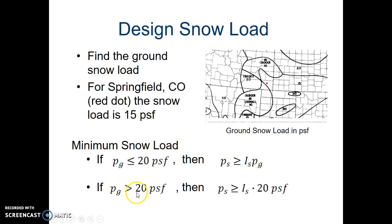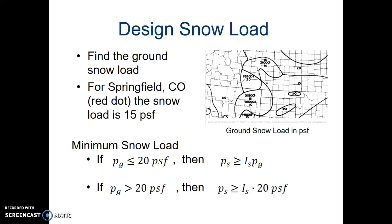If the PG is greater than 20 pounds per square foot, then your PS, the design snow load, must be greater than or equal to the importance factor times 20 PSF — though that number would change. For example, where we live in the Buffalo-Lockport, New York area, the ground snow load is more in the range of 50 pounds per square foot. Next up, we'll be doing some calculation stuff.